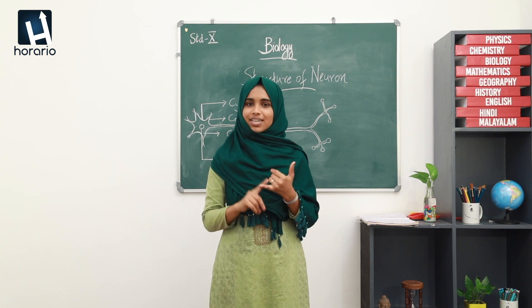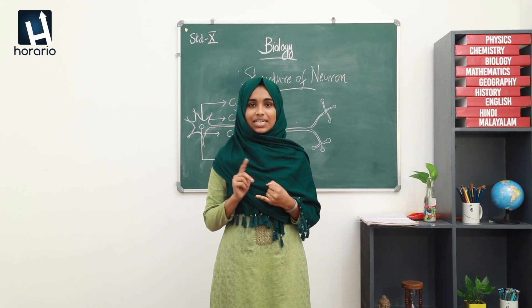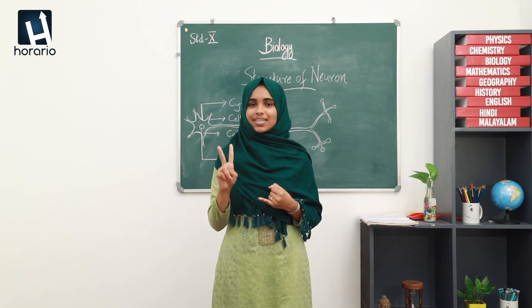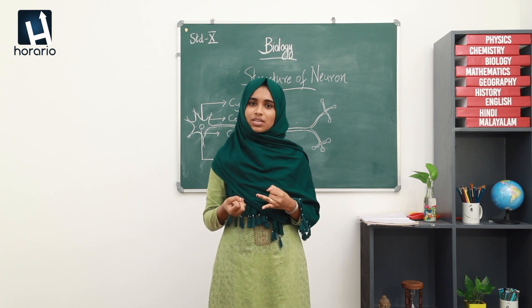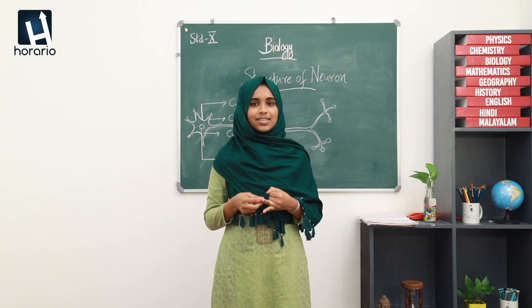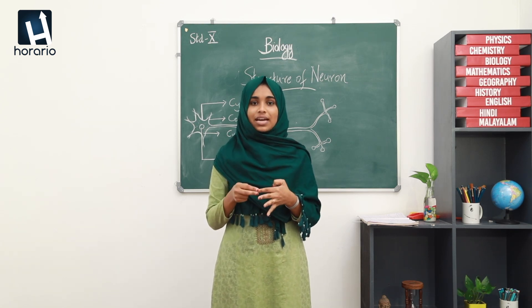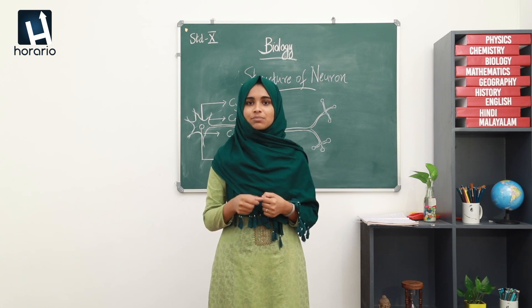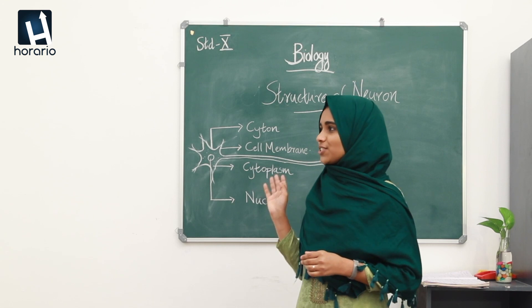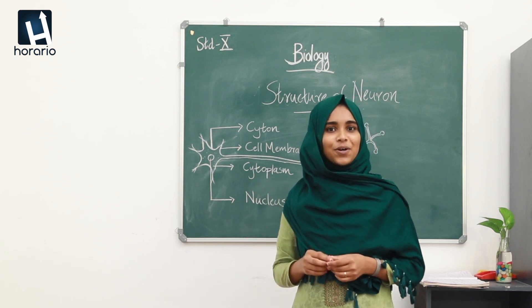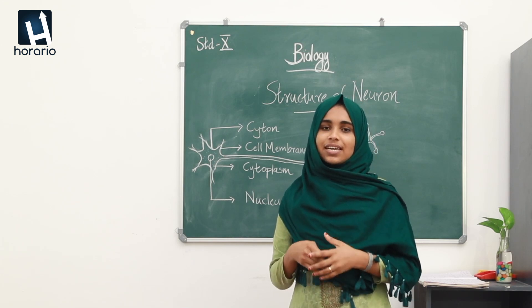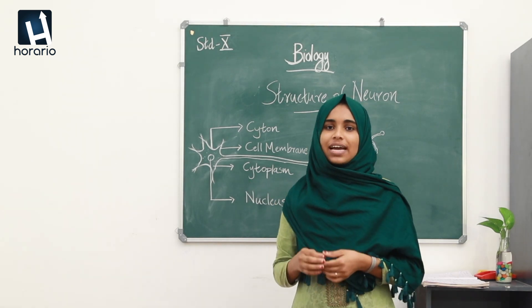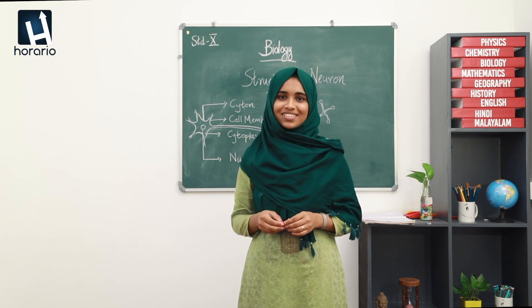In this class we discussed the term stimulus and two types of stimulus — internal and external. We discussed receptors, which are specialized cells that receive stimulus and generate impulses, the term impulses, the nervous system, and the basic structural unit of the nervous system which is the neuron. We compared the structure of the neuron with that of a tree. Please draw this picture in your notebook and study what we discussed today. If you have any doubt, please leave it in the comment box. Thank you.